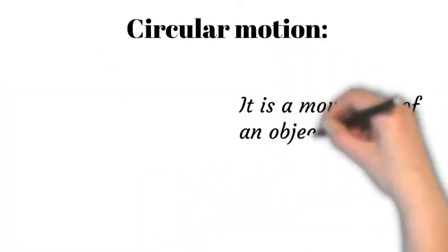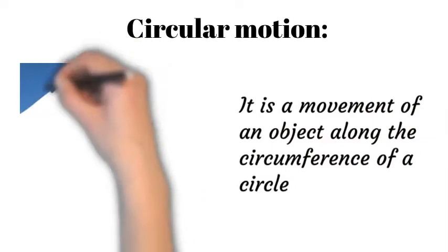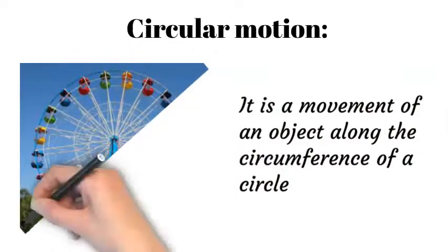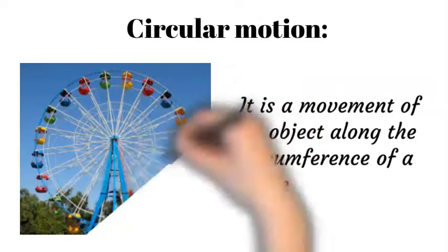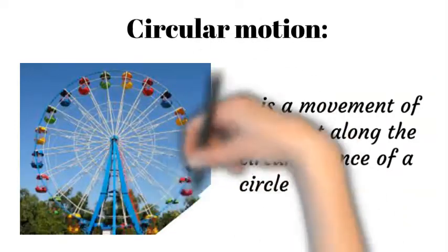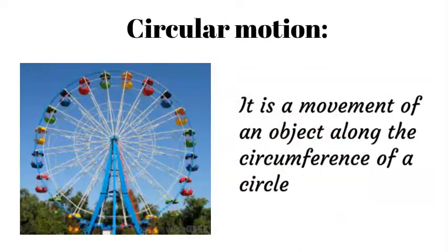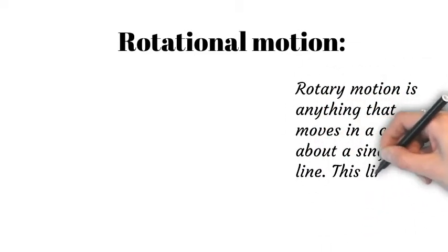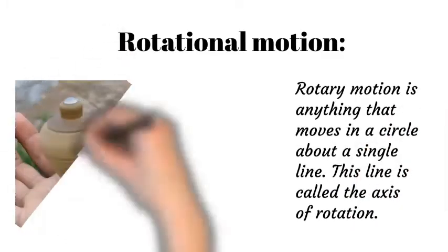Circular motion is the movement of an object along the circumference of a circle. Rotational or rotatory motion is movement about a single line or axis. Periodic motion is something that moves back and forth.